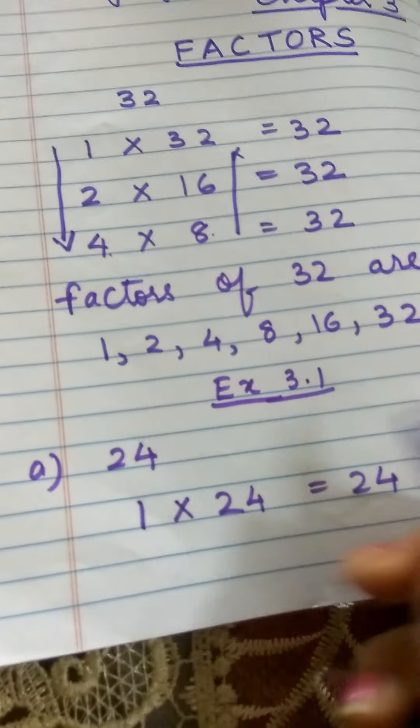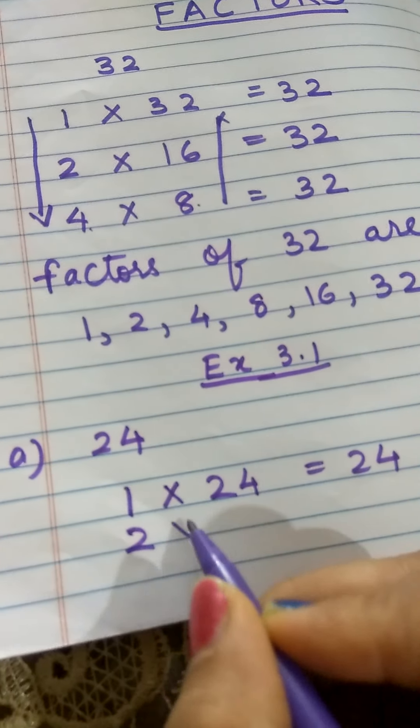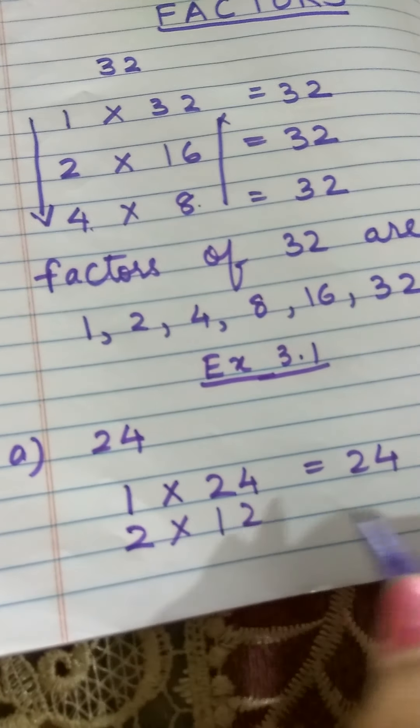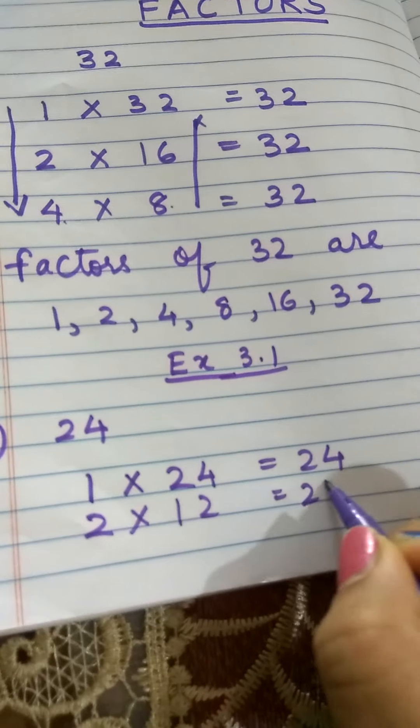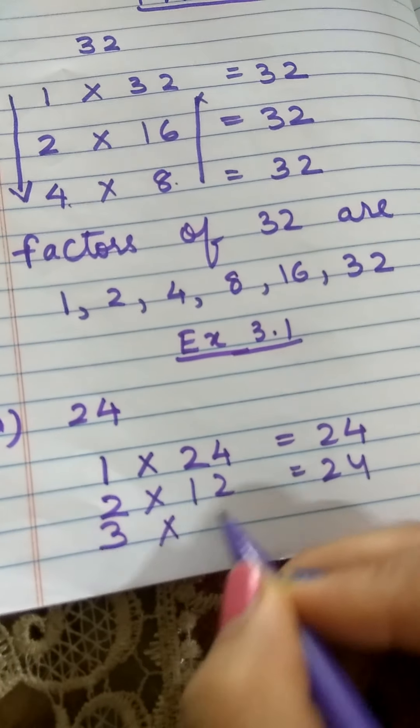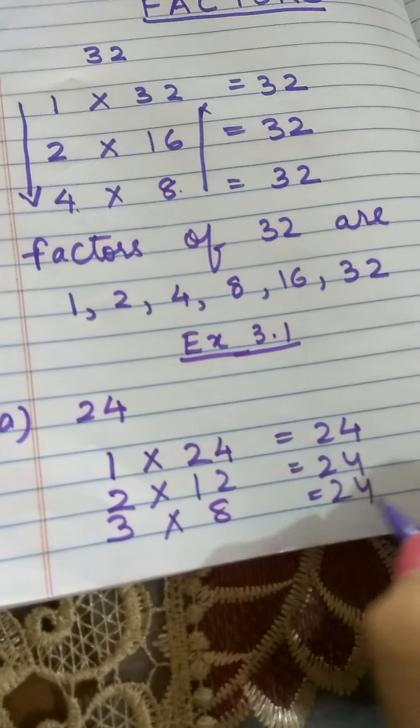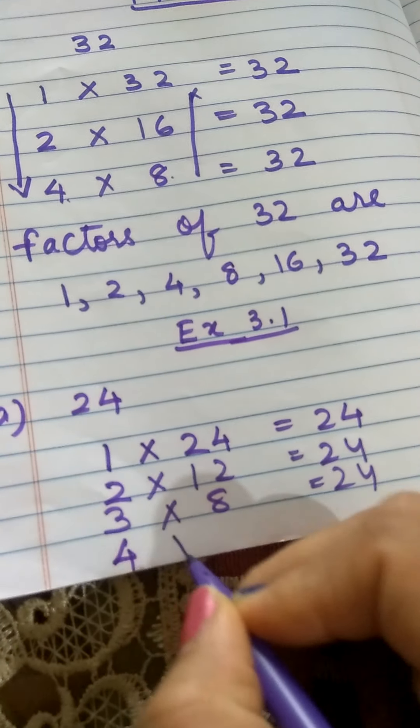Then I will try for 2. Since it is an even number, yes, it will be divided by 2. So 2 into 12 is 24. Then 3, yes, 3 times 8 is 24. 4, 4 times 6 is 24.